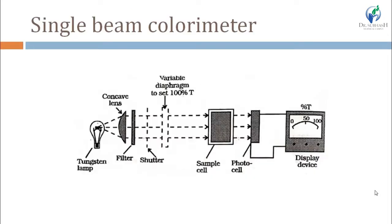This is the single beam colorimeter. It consists of a tungsten lamp as a source of light. The radiation is focused onto a slit by a concave mirror, then passes through a simple absorption filter where only the required wavelength of light passes through and falls onto the sample cell. The sample solution absorbs part of the radiation and the rest is transmitted. The transmitted radiation intensity is determined using a photovoltaic cell and displayed using a digital display or galvanometer. Single beam colorimeters are simple in construction, inexpensive, and easy to operate.